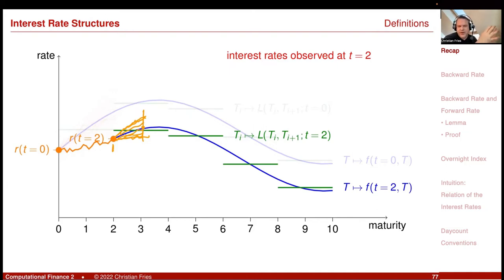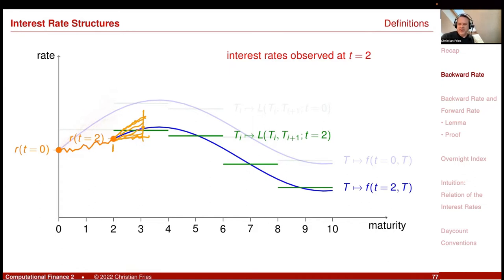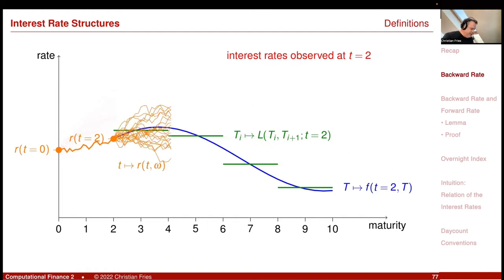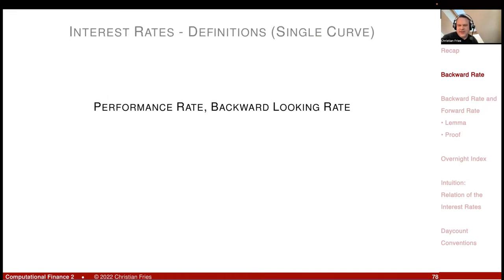In the lecture I will focus on modeling the blue curve and the green curve. The green forward rates are sometimes called LIBOR rates for historical reasons, because the LIBOR — London Interbank Offered Rate — followed the convention of being a rate for a fixed time period, such as three months or six months. But this rate has been abandoned and replaced by something called the backward looking rate. So let's define this.